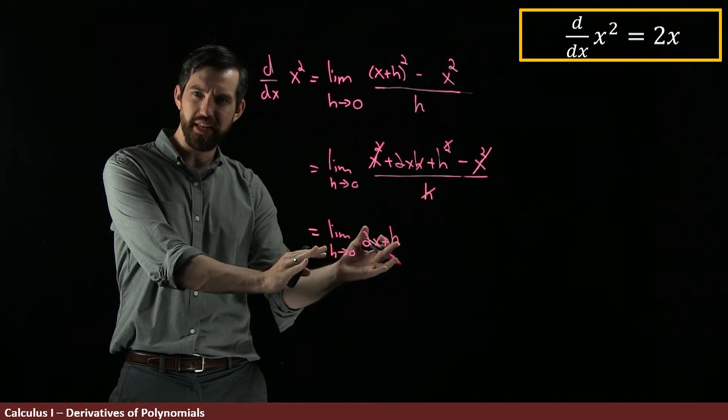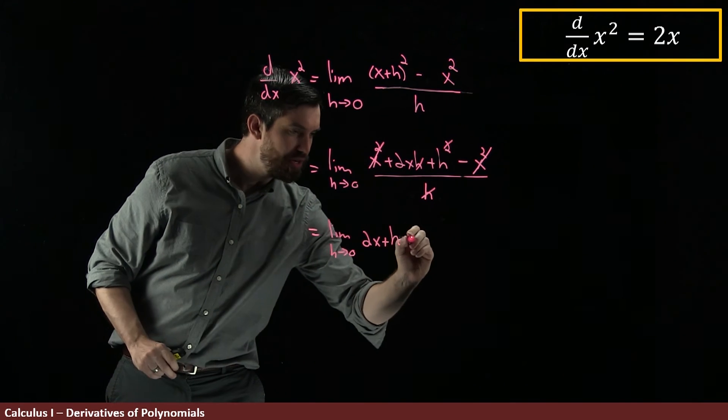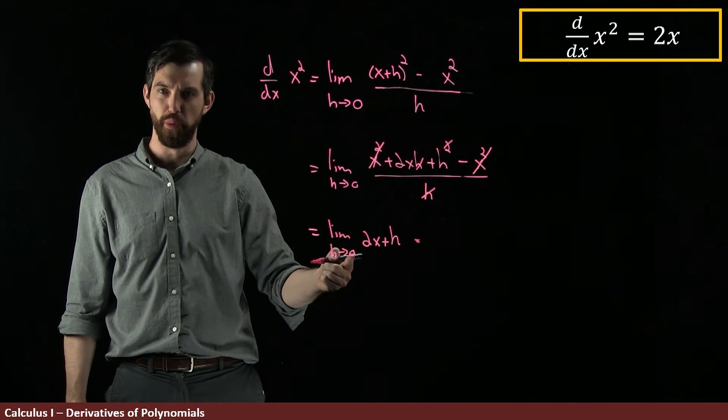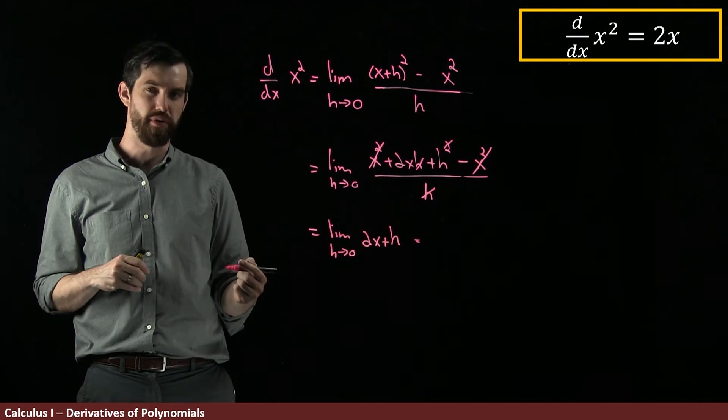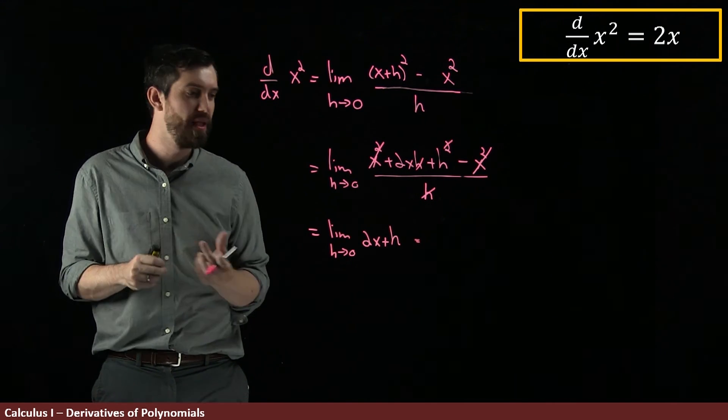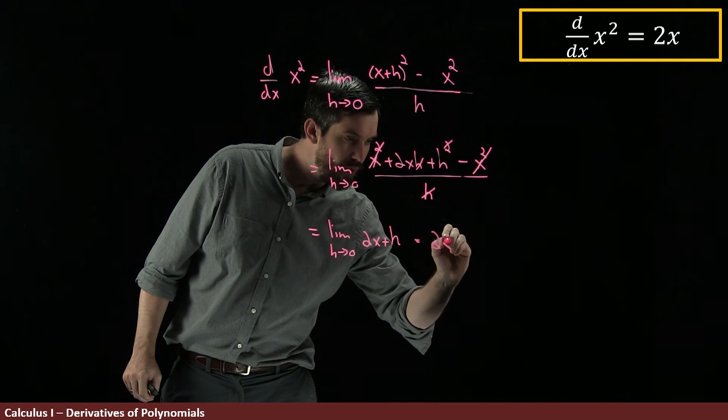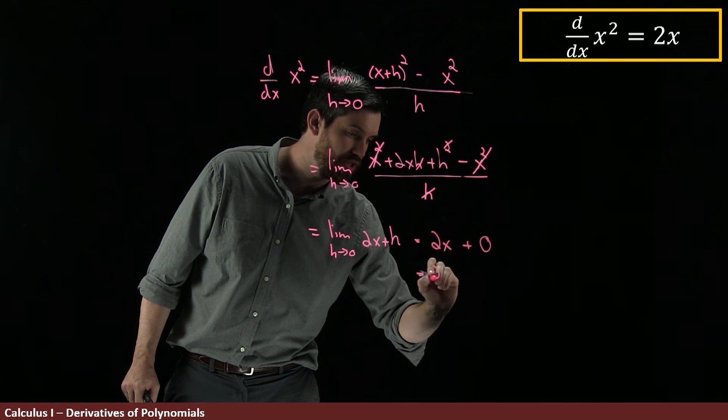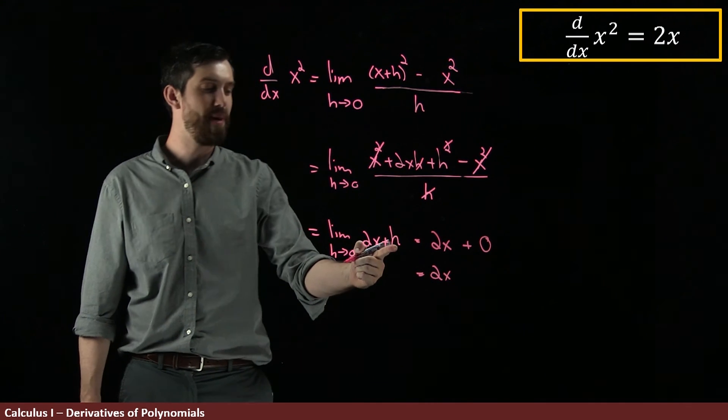So now I want to actually execute the limit. I'm going to take h to zero. Now this is a polynomial - we've got rid of any division by zero things - and we know how to take the limit of polynomials: just plug in the number. So what do I get? 2x, and maybe I'll put the plus zero as well, but this is just equal to 2x.